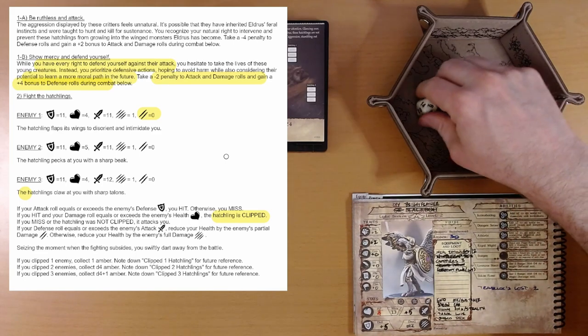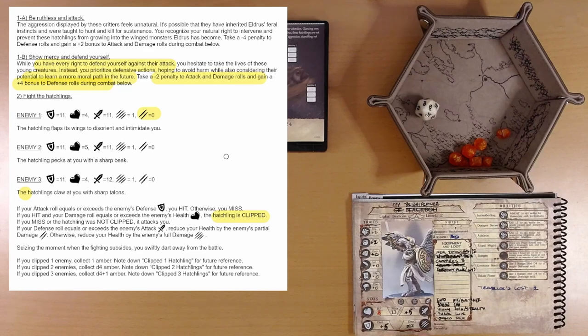This is our attack roll is six. Six plus five is eleven. Minus two is nine. So we do not hit it. I think is what we want. So we don't roll damage.